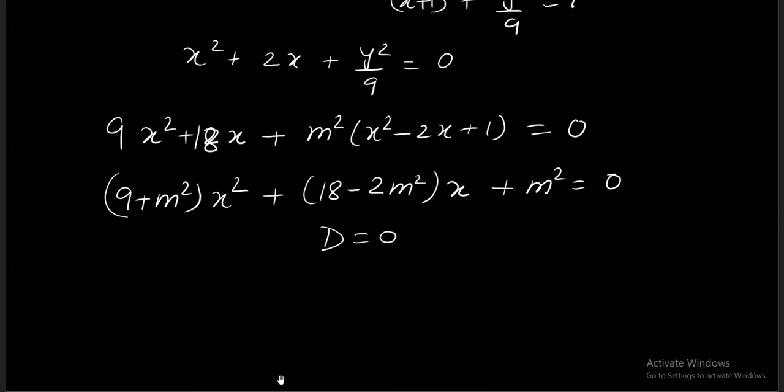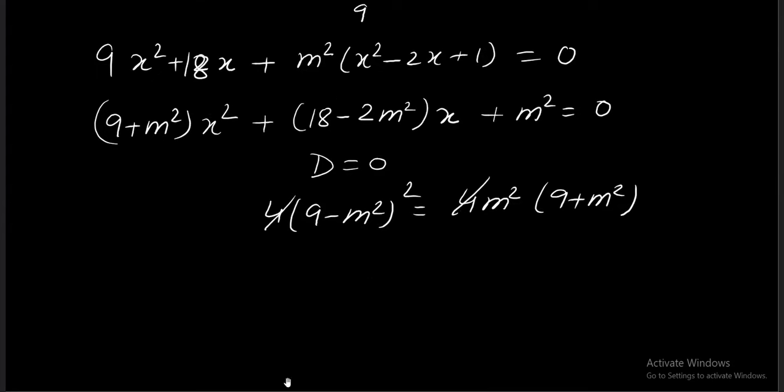Putting the discriminant equals to 0 gives me b square equals 4ac. This 4 got cancelled. On the other side we have 9m square plus m power 4. Canceling m power 4, I'm getting 27m square equals 81.